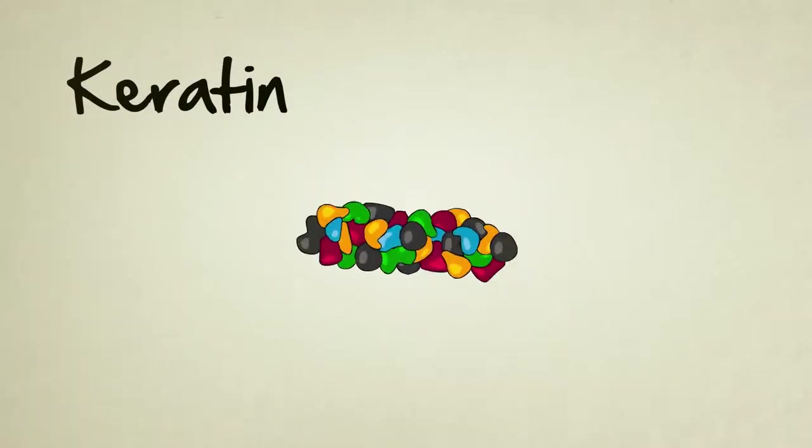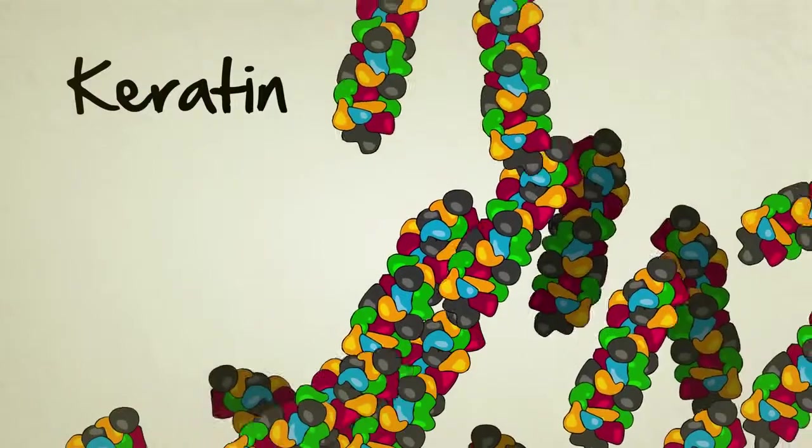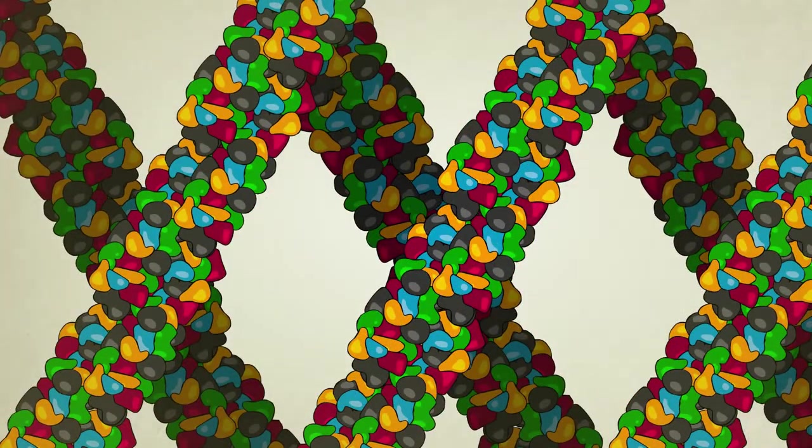Keratin is a structural protein. Its unique shape and size allow it to link together with other keratin proteins to form hard structures like fingernails, claws, and beaks.